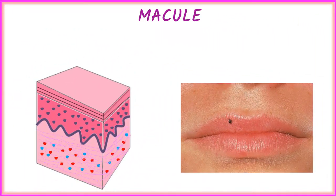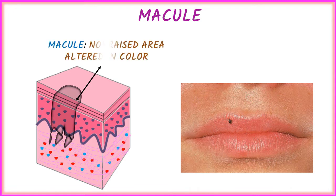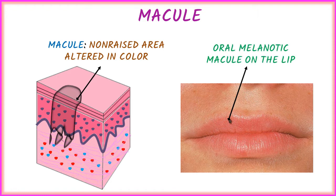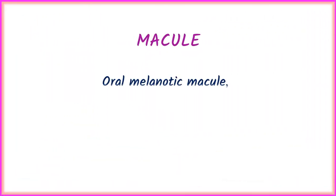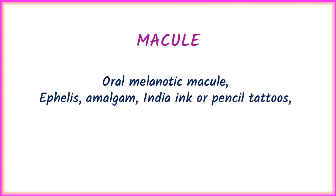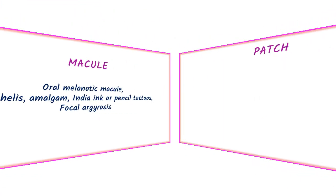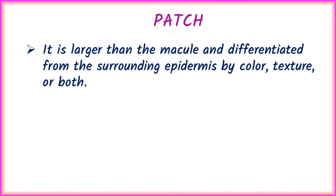Looking at the figure, the black shaded area represents a macule, which is a non-raised area altered in color. In the next figure, you can see oral melanotic macule on the lip. Oral conditions in which macule is seen include oral melanotic macule, amalgam tattoo, Indian ink or pencil tattoos, and focal argyria.